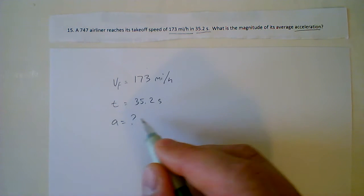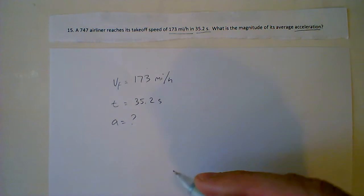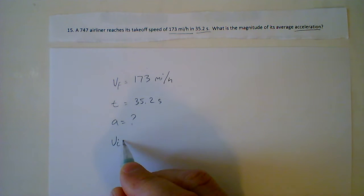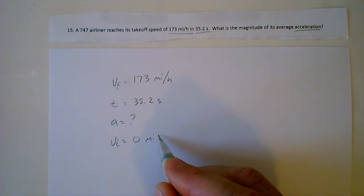Remember you need this unknown in order to pick your right equation. And I can assume that we're starting from zero since it's going to get to that takeoff speed. And really I can ignore the units here because it is a zero.